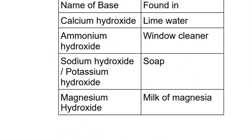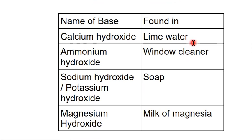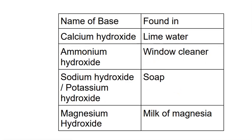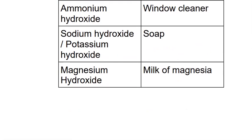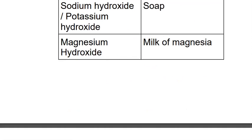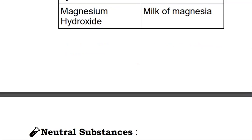Now let's see examples of bases. Calcium hydroxide is found in lime water. Ammonium hydroxide is found in window cleaners. Sodium hydroxide or potassium hydroxide are found in soap — the soap you use to wash your hands, to bathe, and to clean your clothes is actually a base because it feels soapy when you rub it. Magnesium hydroxide is found in milk of magnesia.